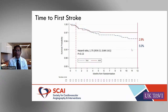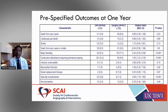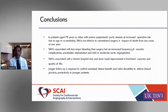Pre-specified outcomes: death from any cause is lower with TAVI, though the p-value is not statistically significant given sample size — but numerically different and at least non-inferior. Bleeding rates are much lower with TAVI compared to surgery — any transfusion over two units is considered a bleeding complication during surgery. Vascular complications are slightly higher with TAVI.